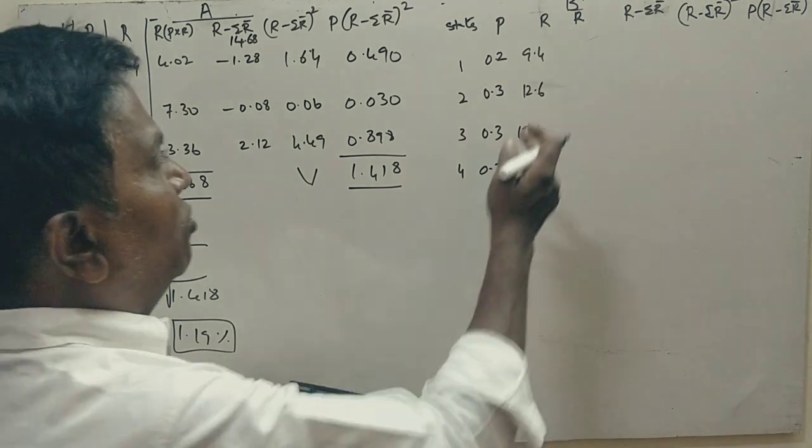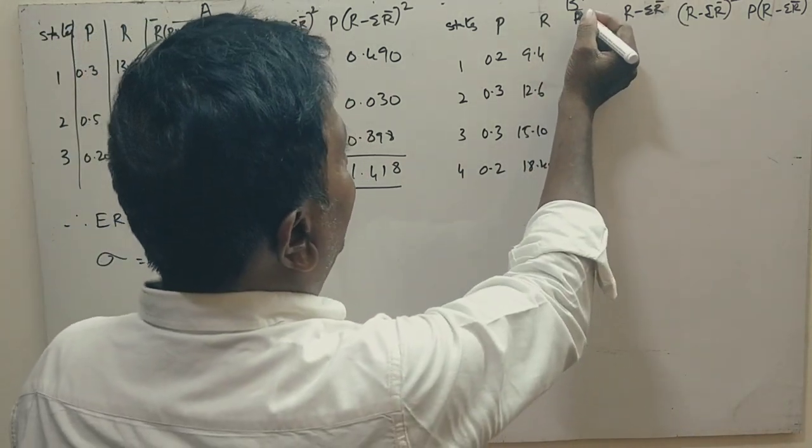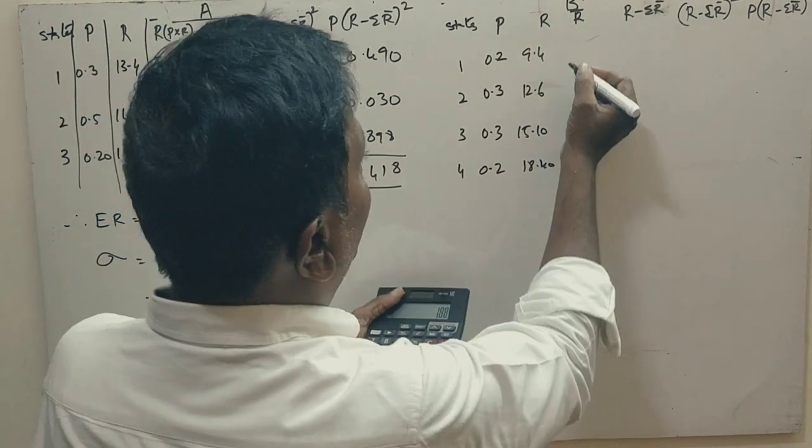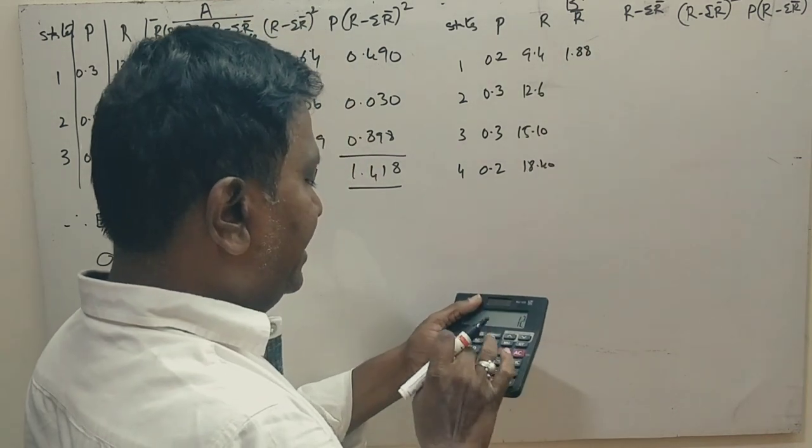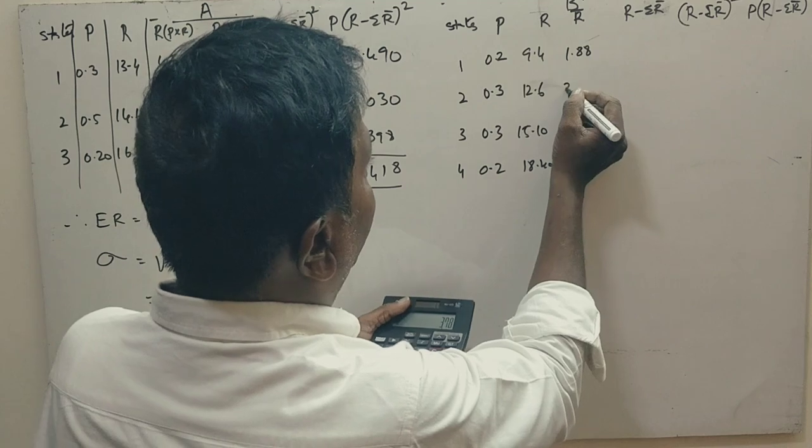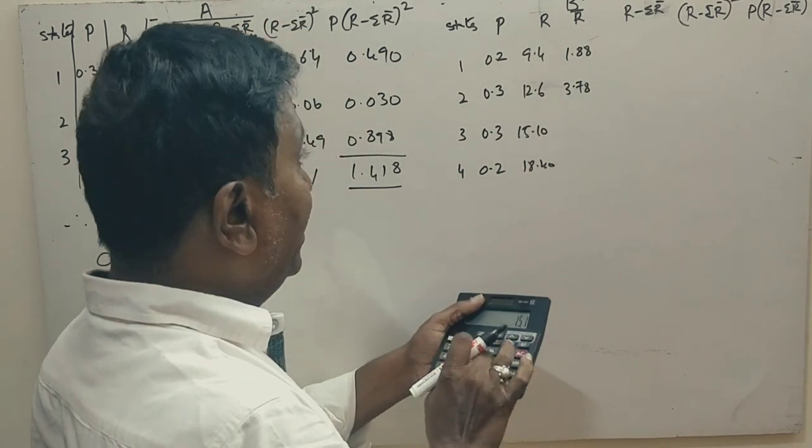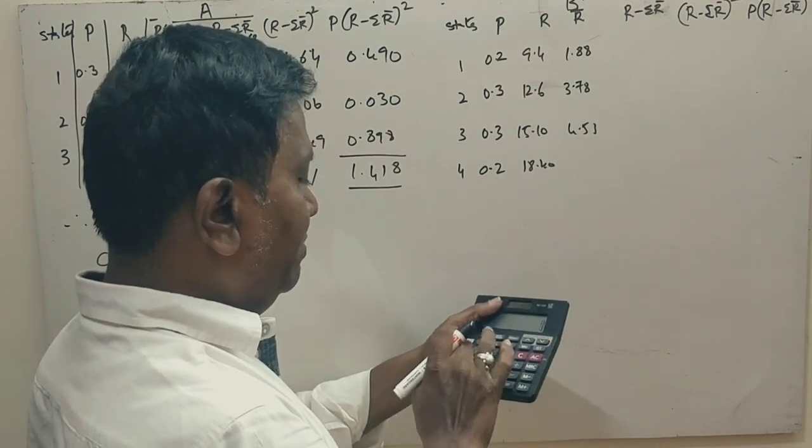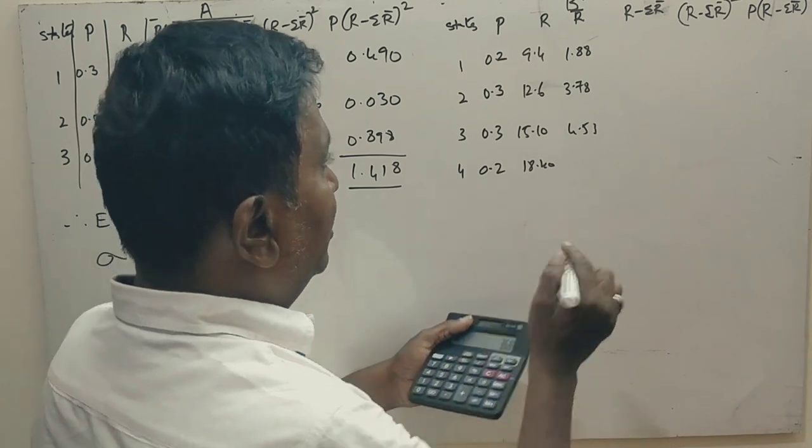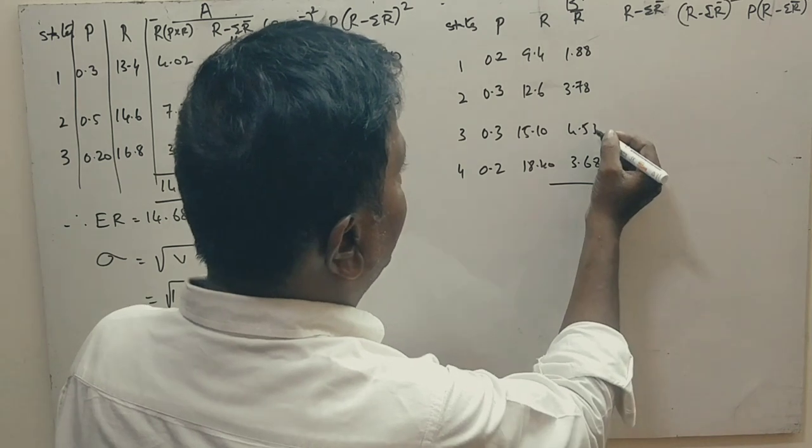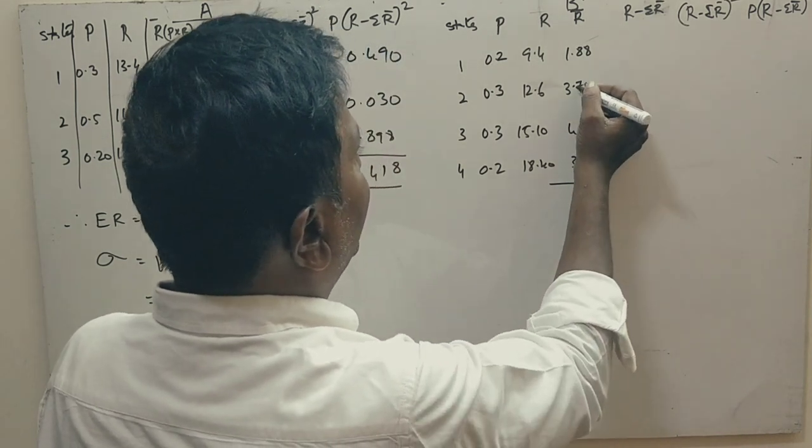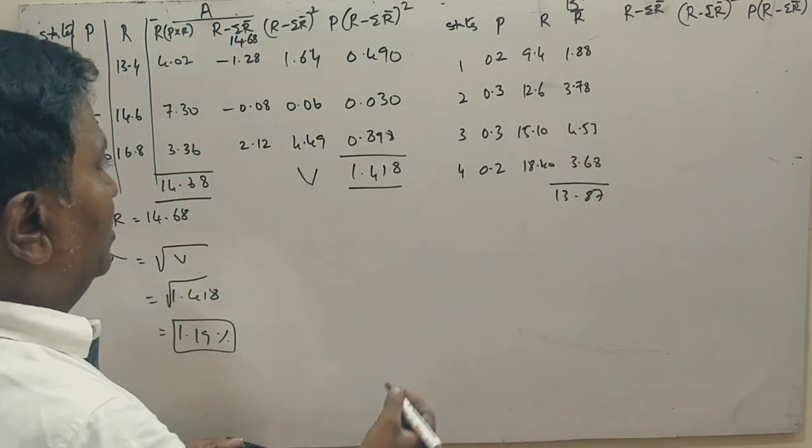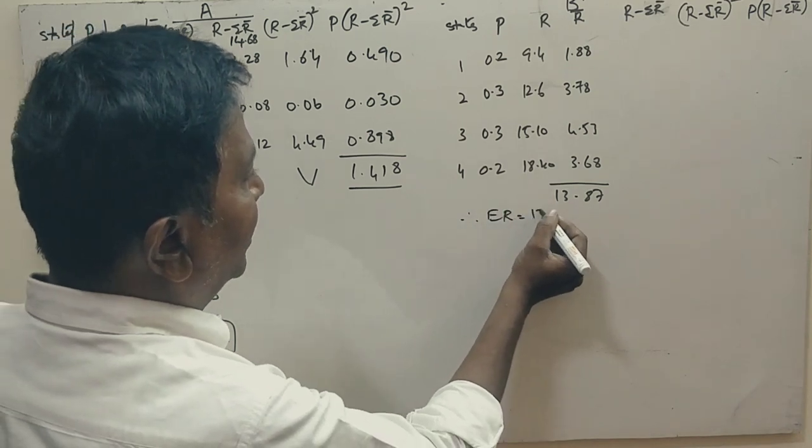Now, let's do Security B. r-bar equals 9.4 into 0.2 is 1.88, 12.6 into 0.3 is 3.78, 15.1 into 0.3 is 4.53, 18.4 into 0.2 is 3.68. The total is 13.87. Therefore, expected return is 13.87.